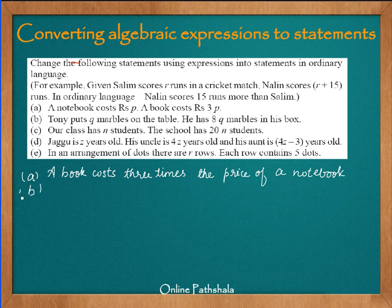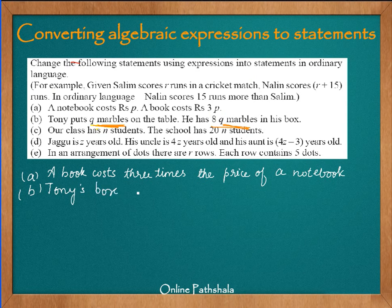Problem B says Tony puts q marbles on the table and he has 8q marbles in his box. Converting this without variables, we can say that Tony's box contains eight times the marbles on the table.